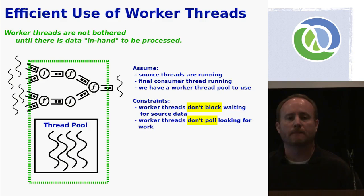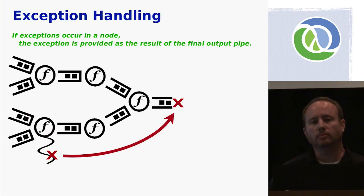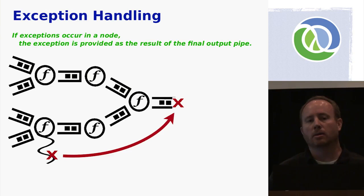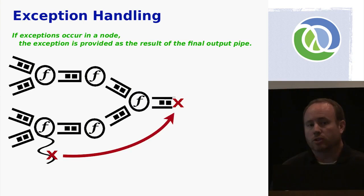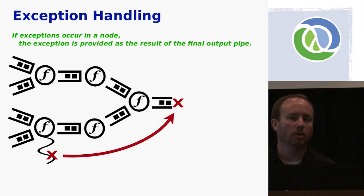On exception handling: when we mentioned that exceptions propagate up and out — yes, it stops the computation at that point. There's no reason you couldn't write a task node function yourself that caught exceptions and handled them in some way, but we don't have anything built in for resilient exception handling like Hadoop's ability to lose a portion and continue. We don't have a model that allows that currently.